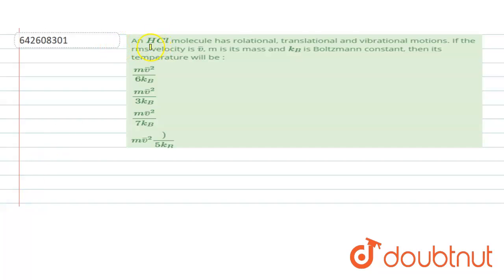Hello, the problem states that an HCL molecule has rotational, translational and vibrational motions. If the RMS velocity is given by V bar, where M is the mass and Kb is the Boltzmann constant, then its temperature will be what?